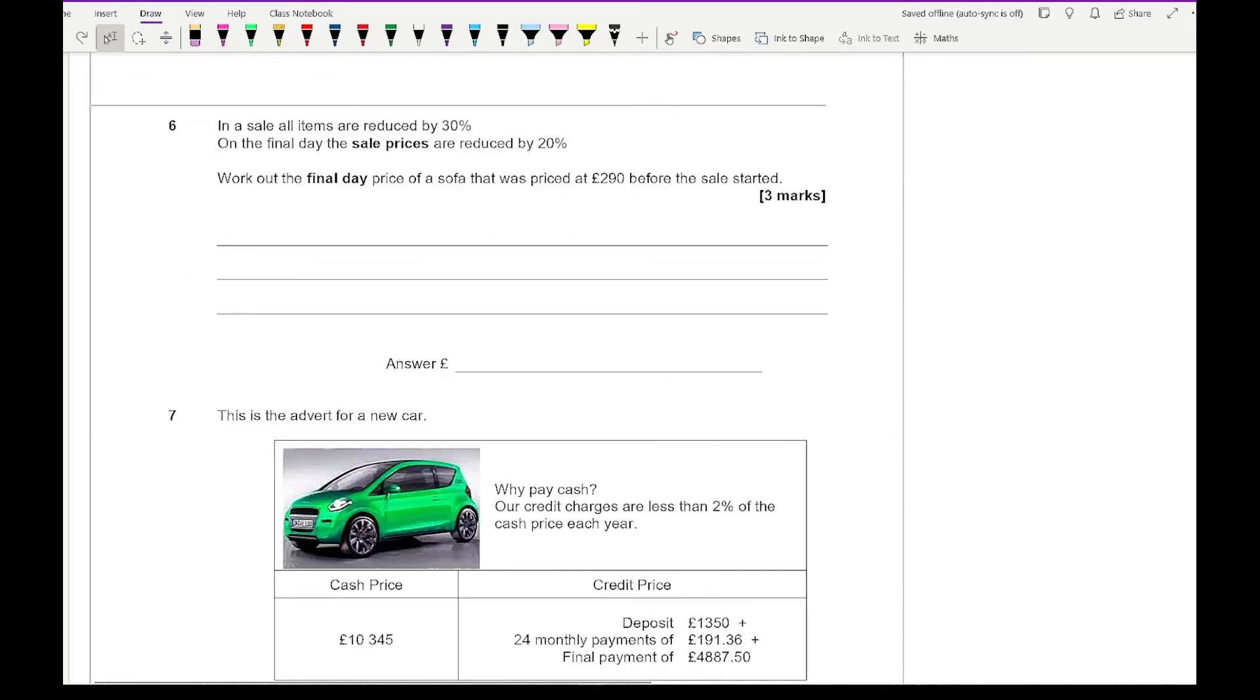Moving on to question six, it says in a sale all items are reduced by 30%. On the final day the sale price is reduced by 20%. Work out the final day price of a sofa that was priced at £290 before the sale started. We want to take off 30% first.